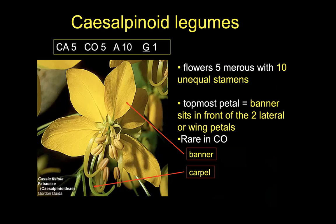There are three broad groups of legumes. First, a smaller group here in Colorado: the caesalpinioid legumes. They're going to have a base of five, an androecium of ten, and a superior gynoecium made of one carpel. The stamens are going to be unequal — some shooting out, some very short. There are very specific names for petals in legumes: banners, wings, and keels. The topmost one towards the sky is the banner, and on the side there are two lateral wing petals, but it lacks the keel that we're about to see.